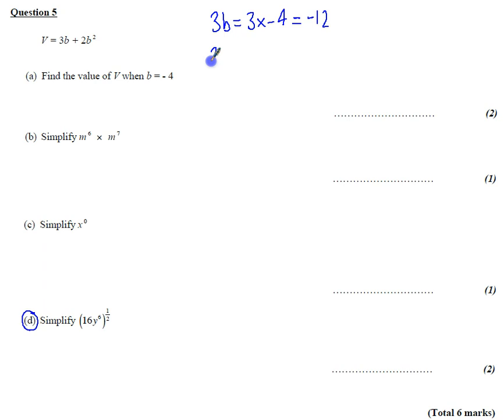And 2b squared, we've got to be careful about this, because we've got to do 2 lots of minus 4 squared. So let's do the minus 4 squared, that's 2 times plus 16, which is 32.